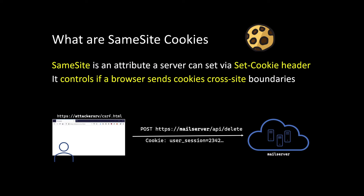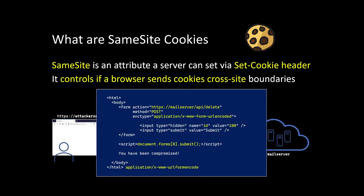In the past, cross-site request forgery would send the cookie along automatically. So it sends the cookie automatically, the server retrieves it, authenticates the user, and the user is compromised. It can perform state-changing operations, like a POST to delete an email. A typical payload with a form POST would initiate such a command, as you can see here. This is how an attack usually looks.